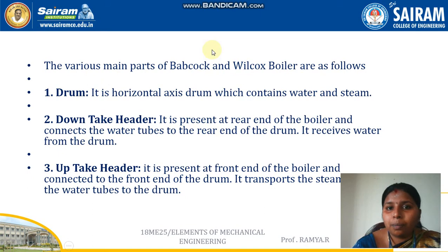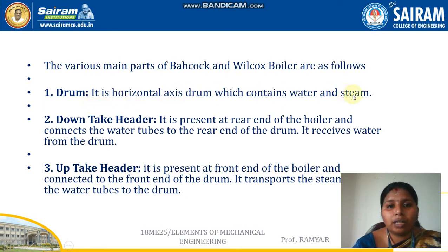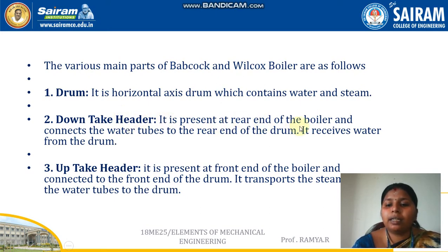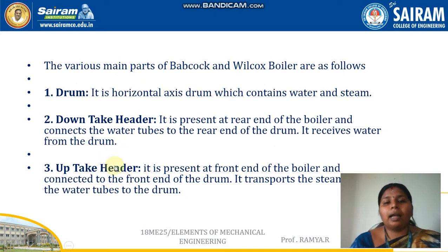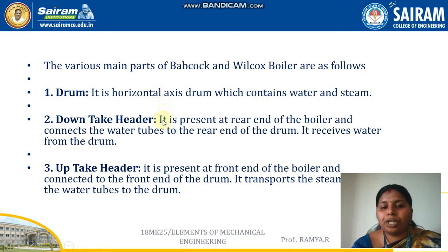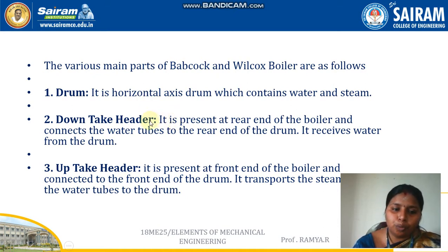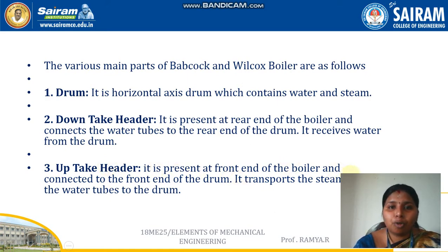The first part is the drum — a horizontal axis drum which contains water and steam. The next is the downtake header, present at the rear end of the boiler. It connects the water tubes to the rear end of the drum and receives water from the drum, passing it down into the water tubes.